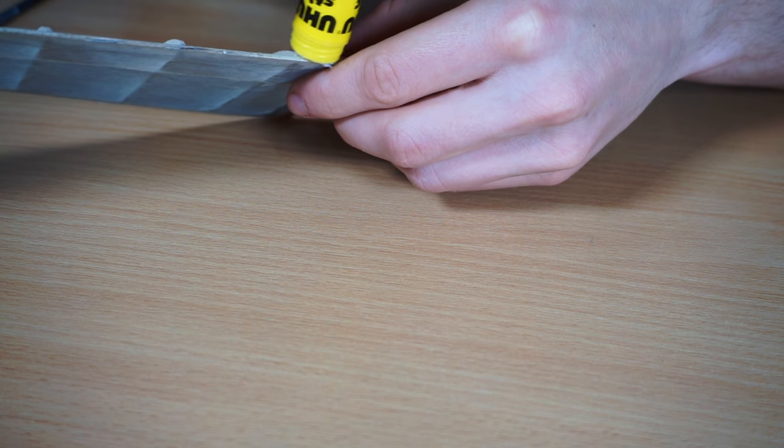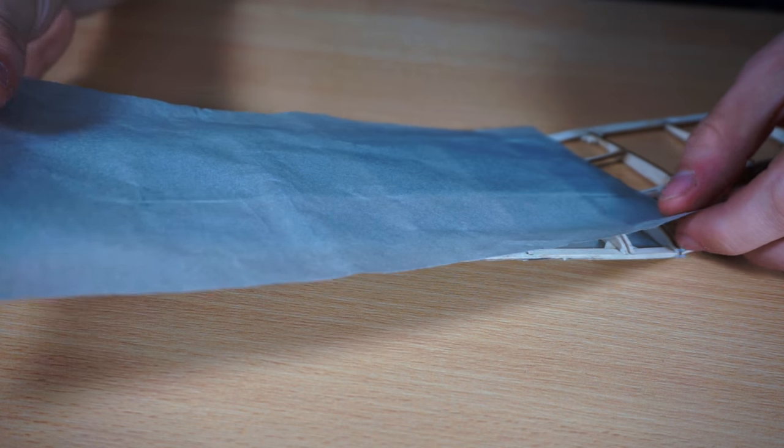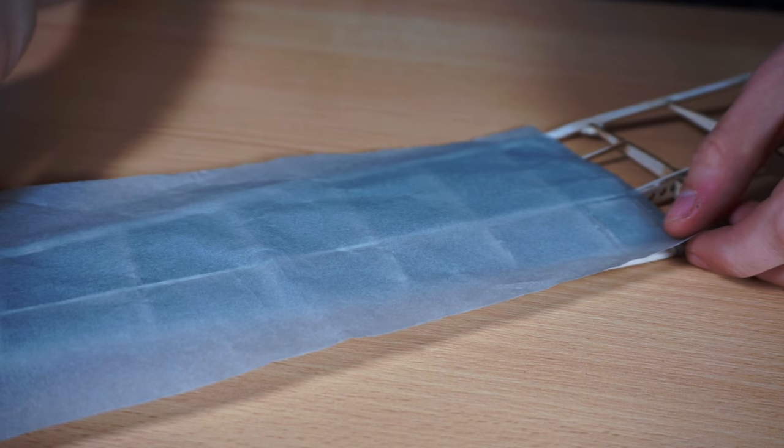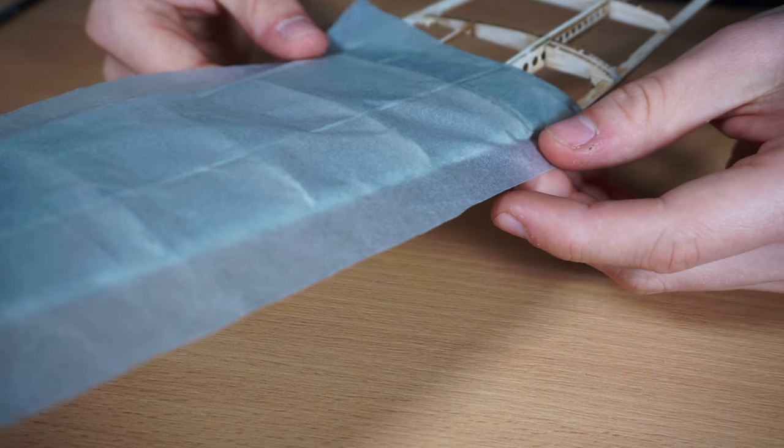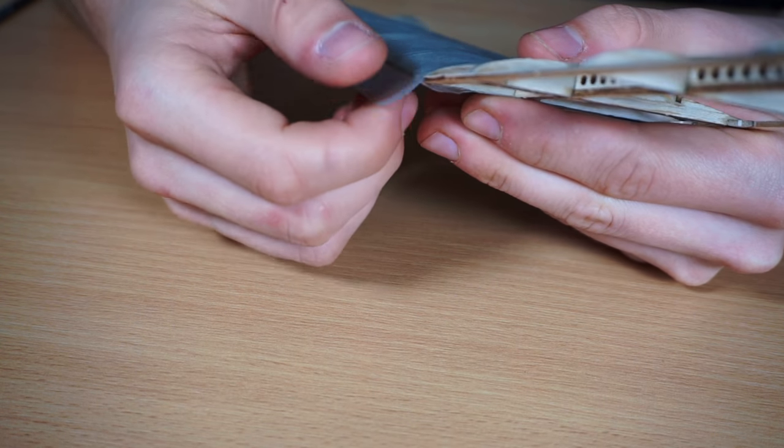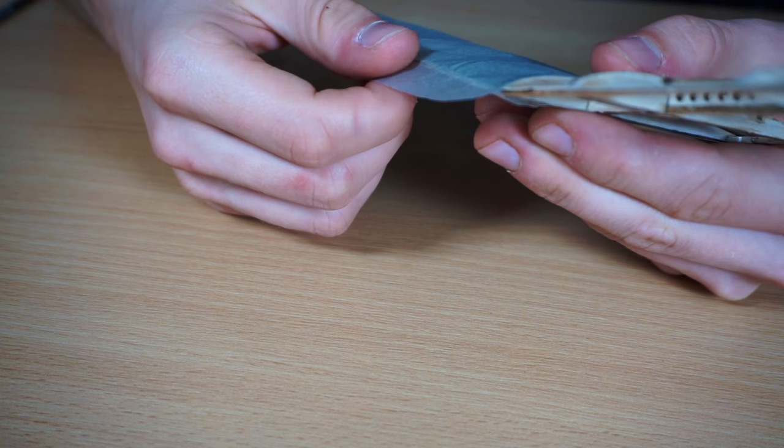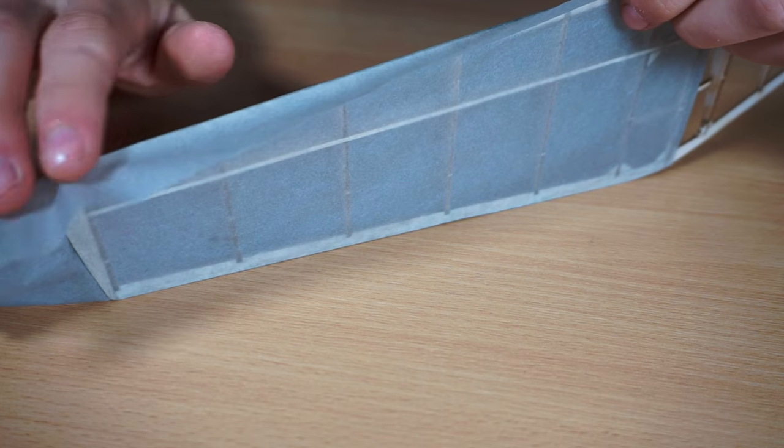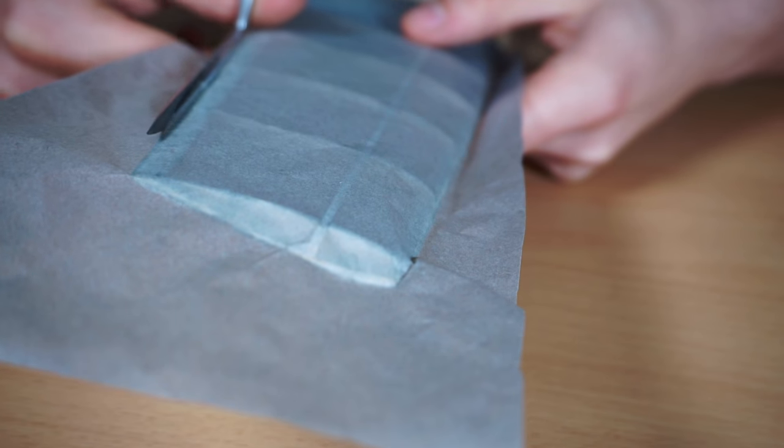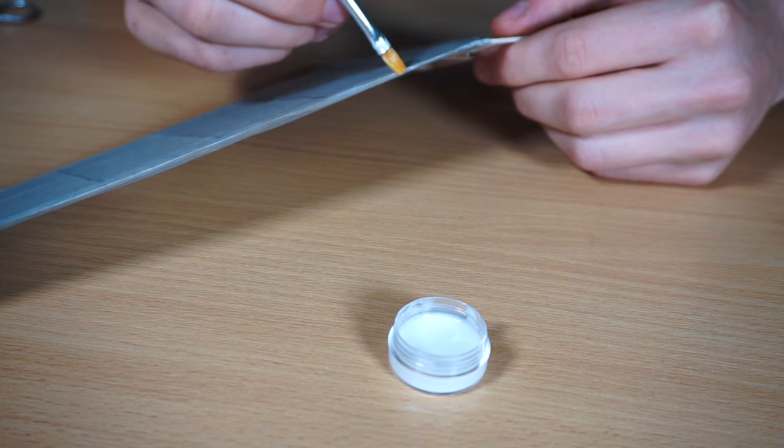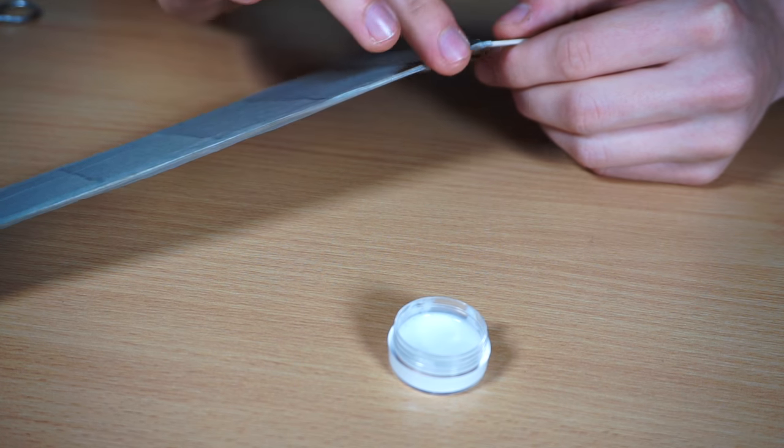Once you're done with this stage, allow the PVA to go off for about 15 minutes or so and then start on the other side. Once you've finished with this, leave the assembly for around 24 hours to make sure that the glue is fully set before water shrinking the tissue.